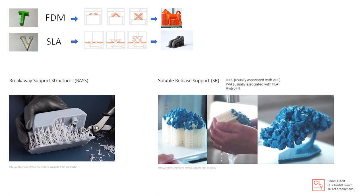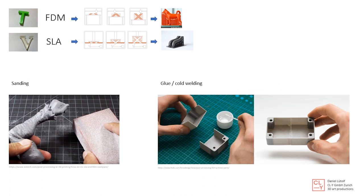Let's start with the first group, FDM and SLA. First, when the print comes out of the printer, we have to break away the support structure. On the left side we see the support structure is quite dense and you have to break it away with pliers and other tools. There's also another solution — a soluble release support that can be washed away with warm water. You dip the model in warm water and the support disappears. To get rid of all the leftover support, you then start sanding the surface with a sanding block or sandpaper, going from a bigger grain to a really fine grain.